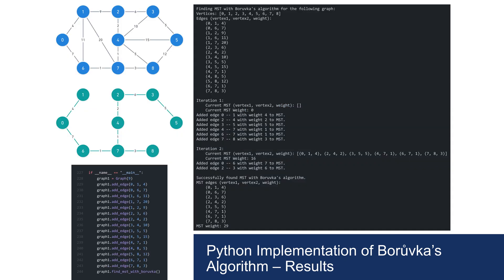Now we'll recreate the example from earlier to test our implementation. On the bottom left, you can see that we've created the graph that represents the original graph, shown on the top left. The output of the code can be seen on the right. Our program finds the correct MST with a weight of 29, identical to the one in green that we found earlier.